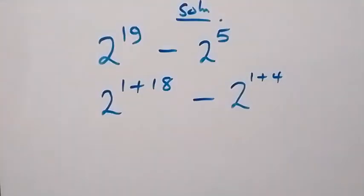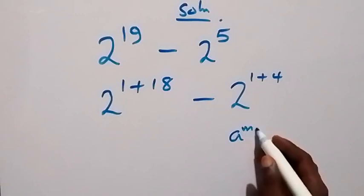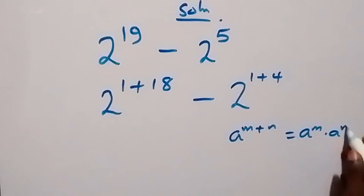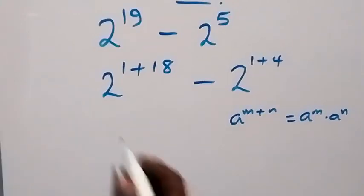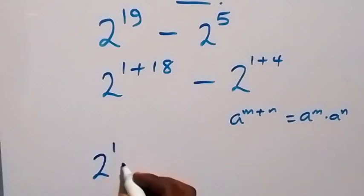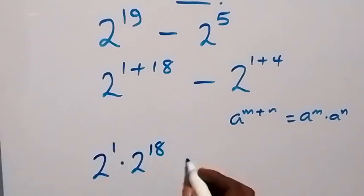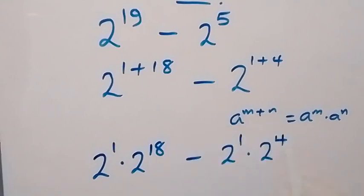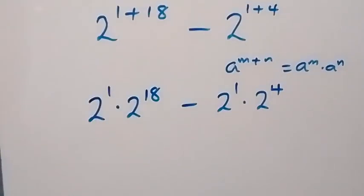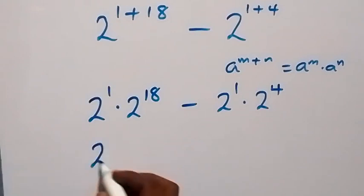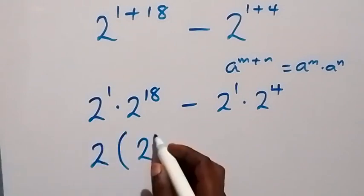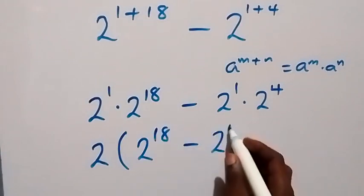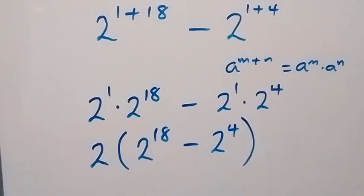From the law of indices, a raised to power (m plus n) is the same as a raised to power m times a raised to power n. We write this as 2 raised to power 1 times 2 raised to power 18, minus 2 raised to power 1 times 2 raised to power 4. Then 2 raised to power 1 is common — that's 2 — so we have 2 into bracket (2 raised to power 18 minus 2 raised to power 4).